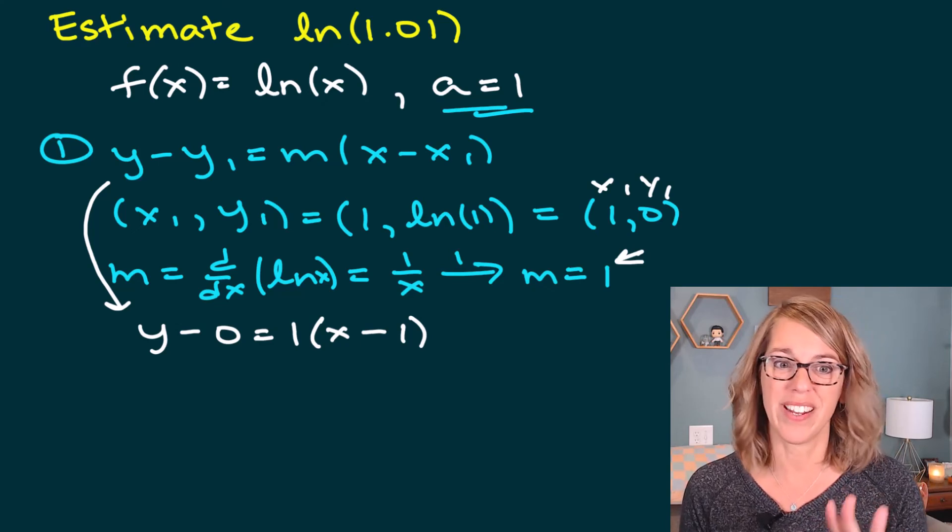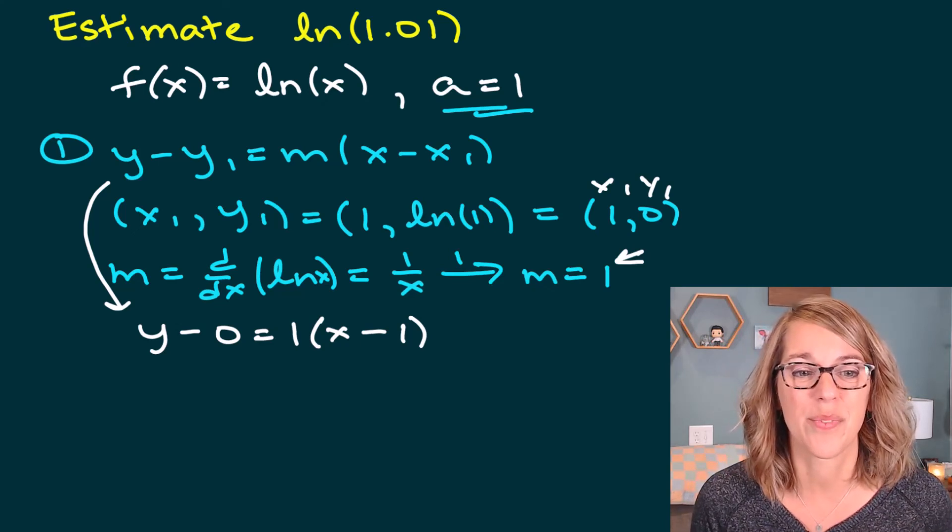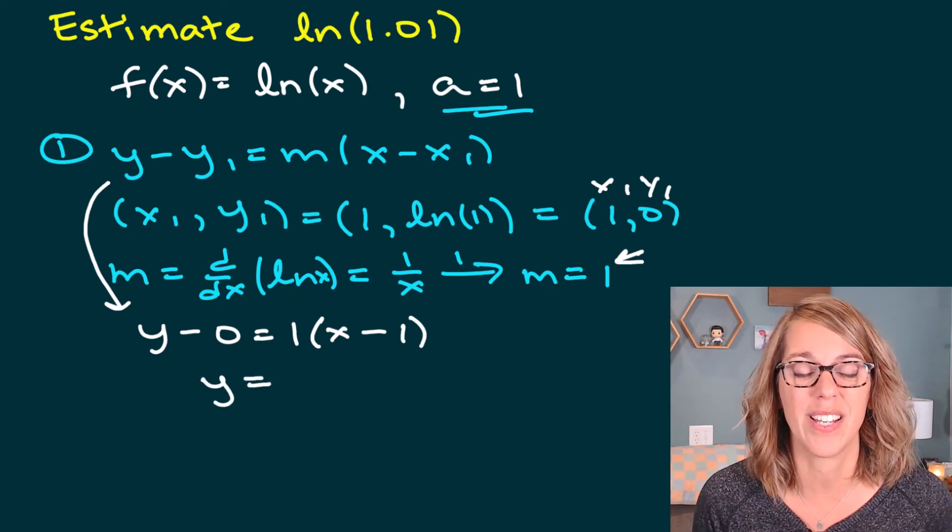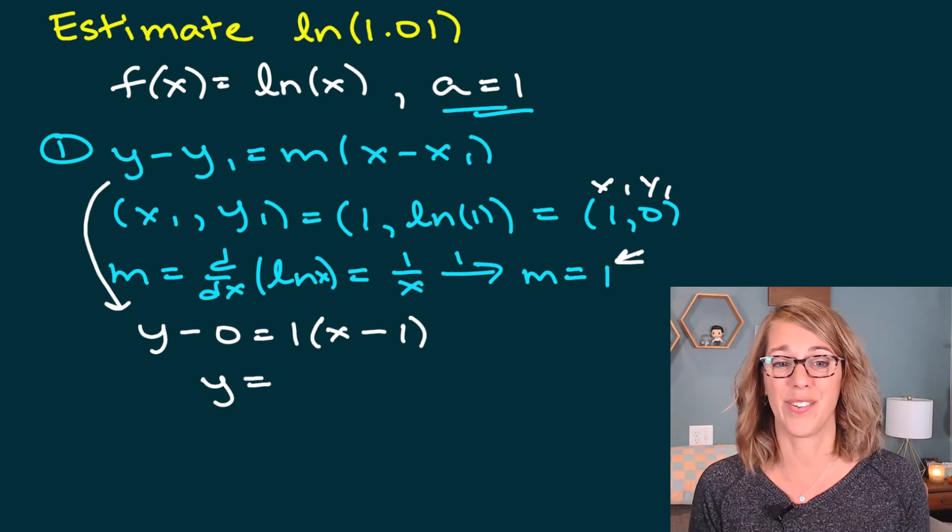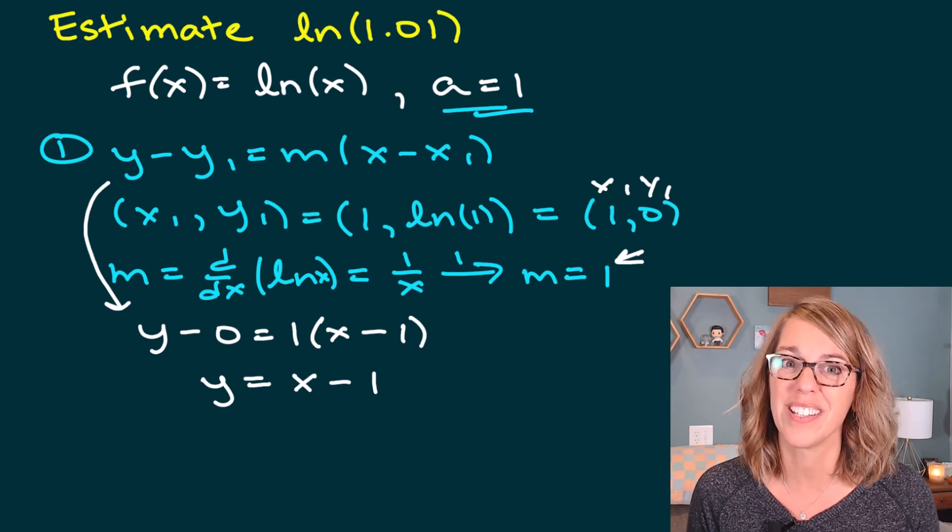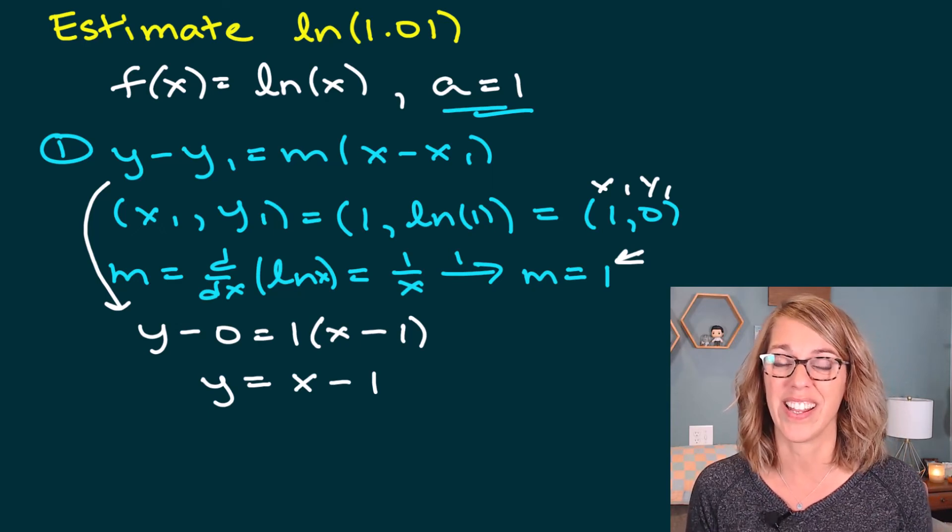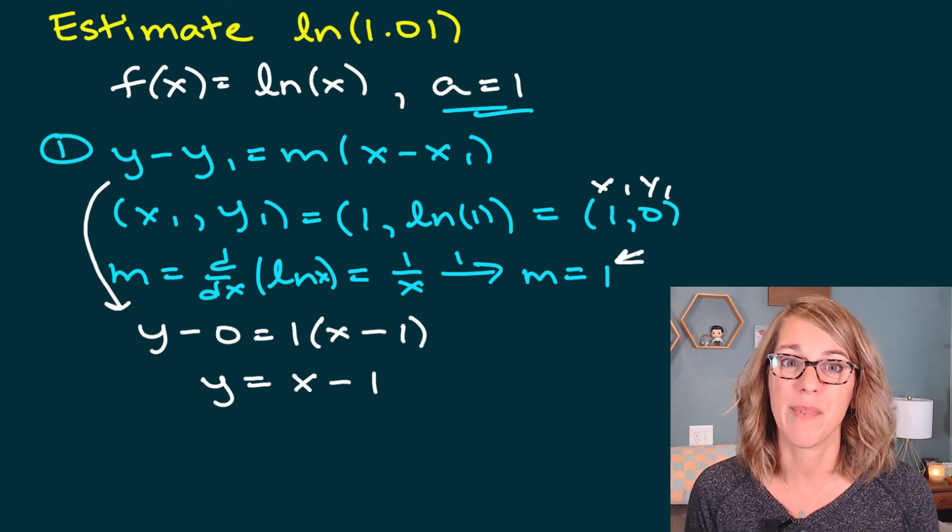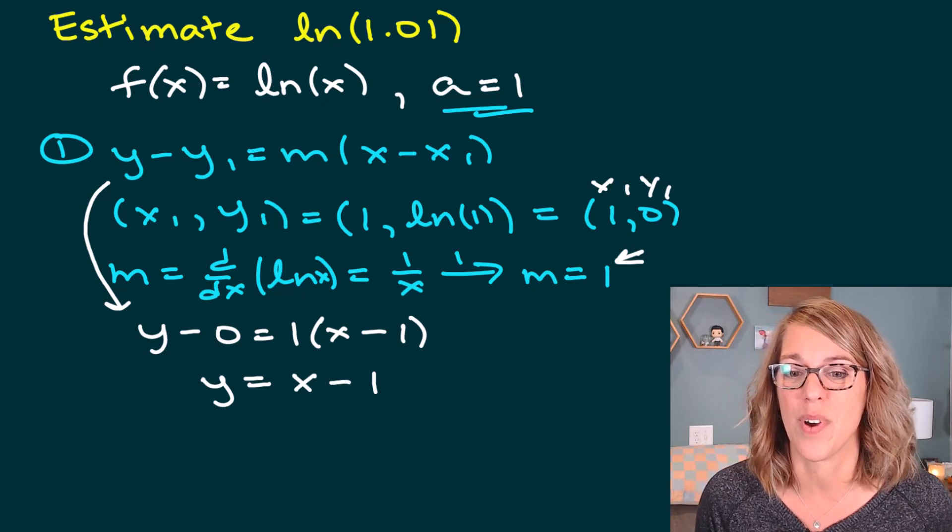I can clean this up just a little bit. I don't really need to do a lot. And I can rewrite this as y is equal to—I can add the zero to both sides, I can distribute that 1—it's just x minus 1, a really nice tangent line.